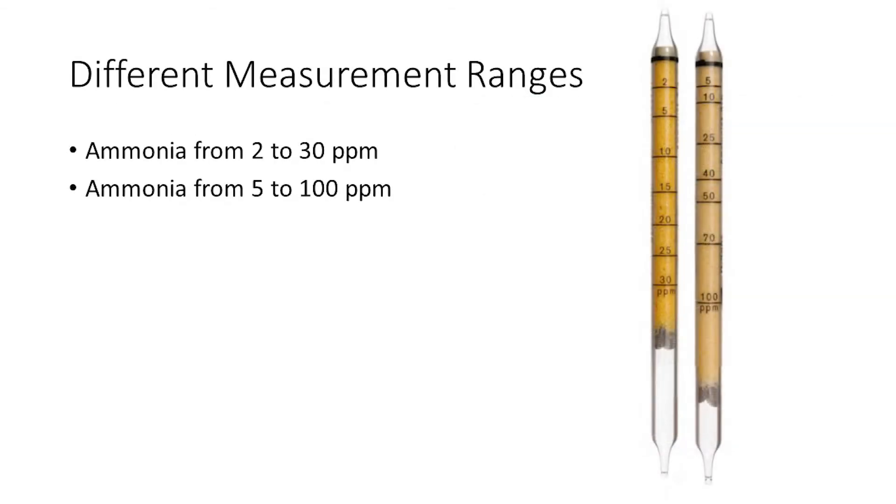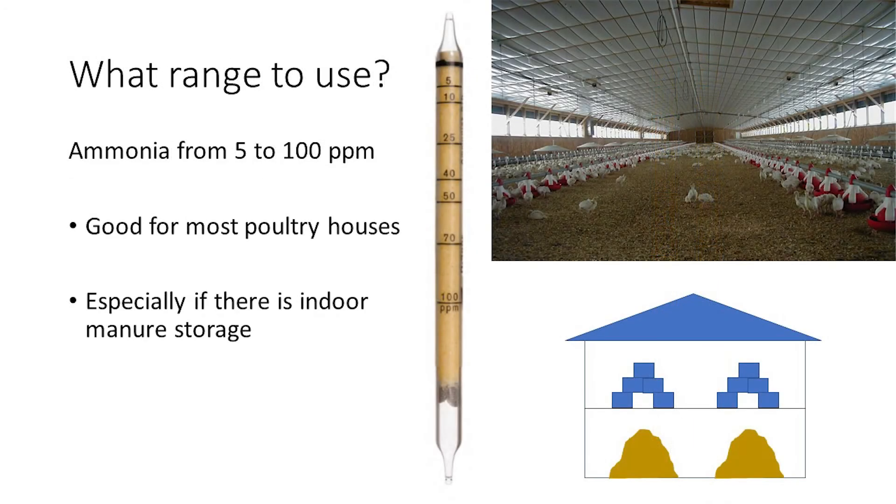Tubes are available with different measurement scale ranges. For example, from two to thirty parts per million or from five to one hundred parts per million. The latter is recommended for most poultry houses, particularly those with in-house manure storages such as high rise layer or broiler houses with built up multiple cycle litter.